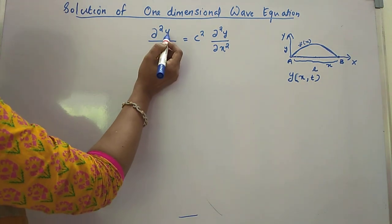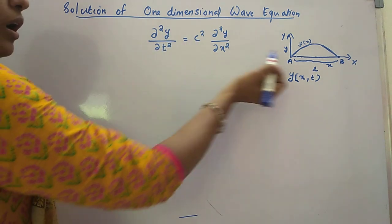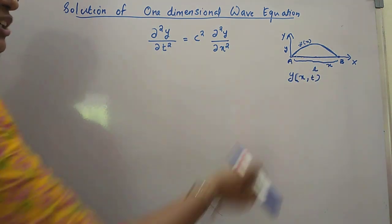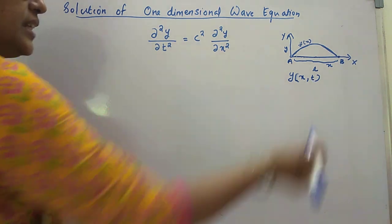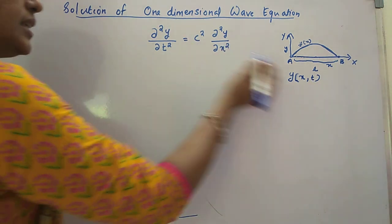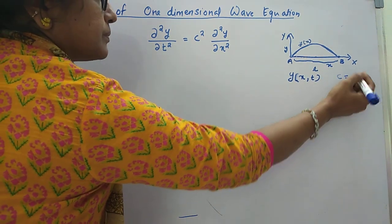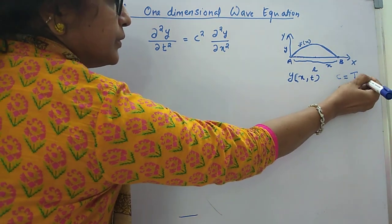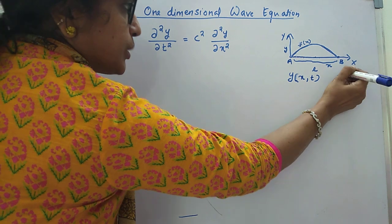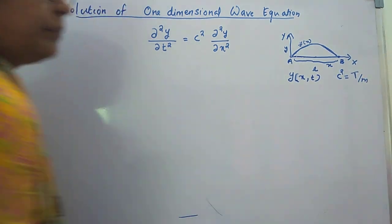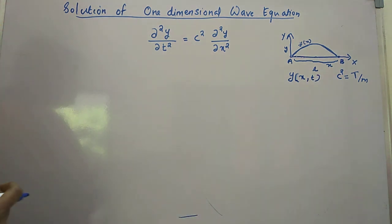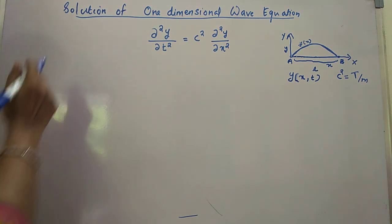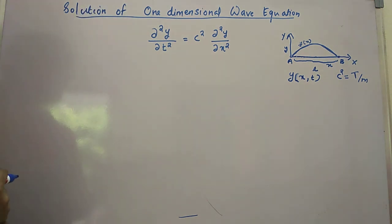So y is the displacement at each point of the string when it vibrates; x is the distance and t is the time. The constant c² is given by T/M, where T is the tension along the string and M is mass per unit length.